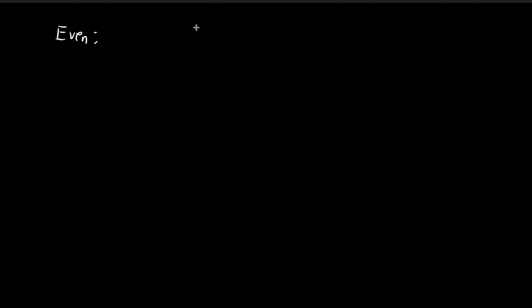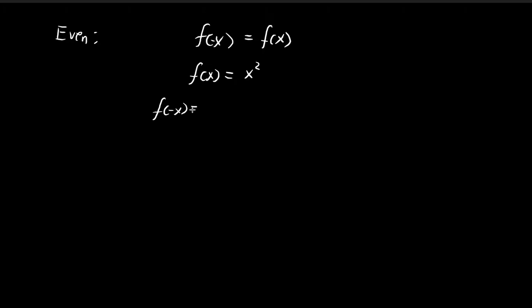For an even function, it satisfies the property that f(-x) = f(x). One example of this would be f(x) = x². You can see that f(-x) = (-x)² = (-1)² × x² = x², which equals f(x).